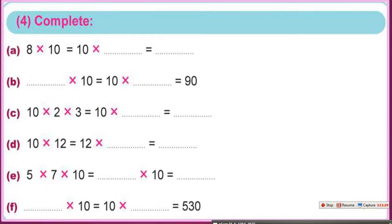8 times 10 equals 10 times 8 equals 80. Because when we multiply numbers, the order doesn't matter — that is one of the properties of the multiplication operation.